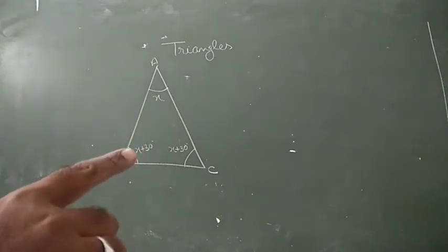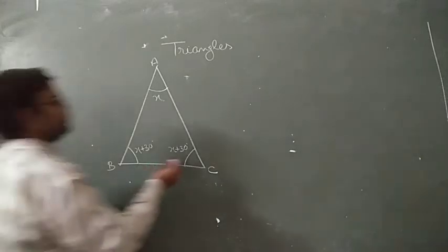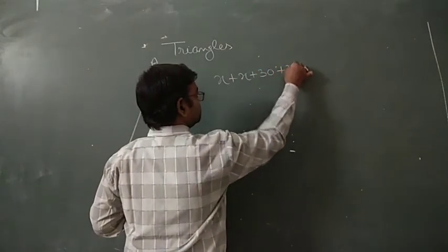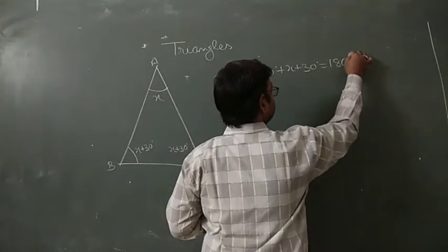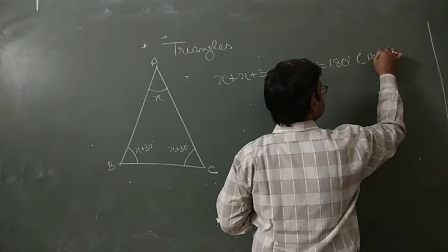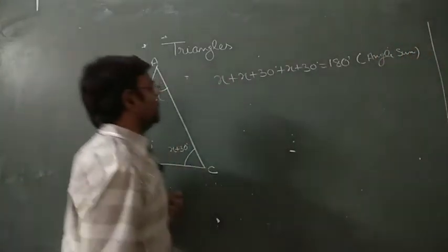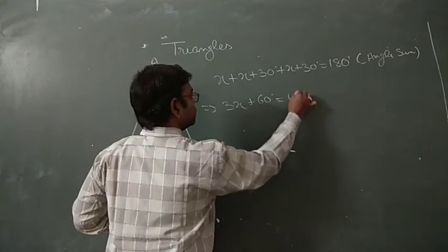Therefore the base angles are x plus 30 and x plus 30. By using the angle sum property, x plus (x plus 30) plus (x plus 30) equals 180 degrees. This gives 3x plus 60 equals 180 degrees.